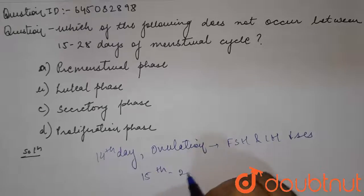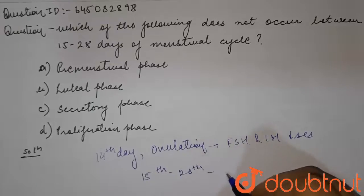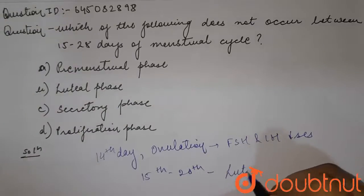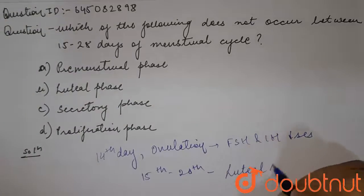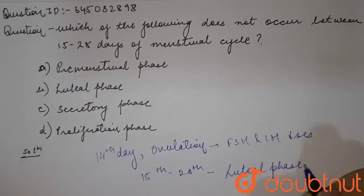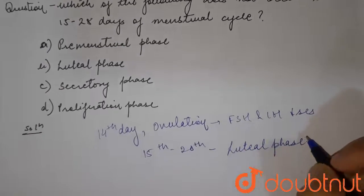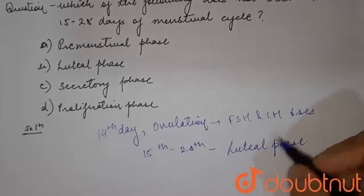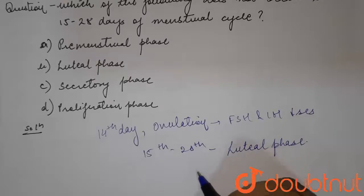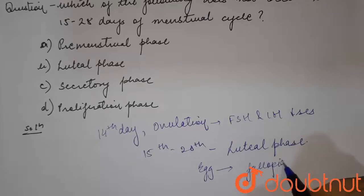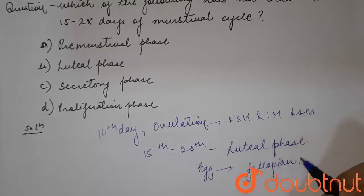So from 15 to 28 days, there is the luteal phase. In this phase, ovulation has occurred and the egg moves to the fallopian tube for fertilization.